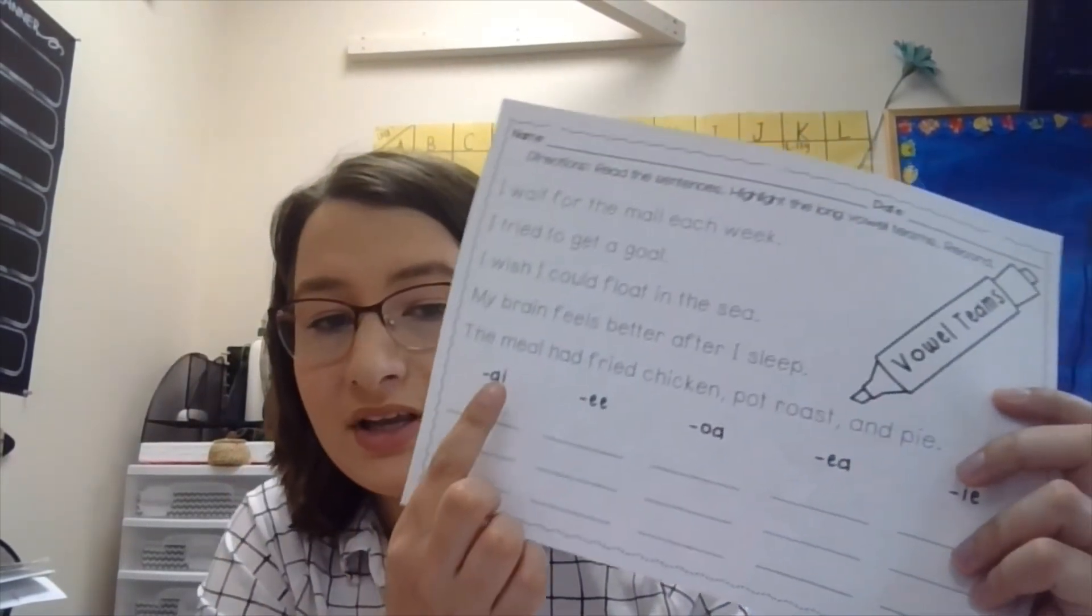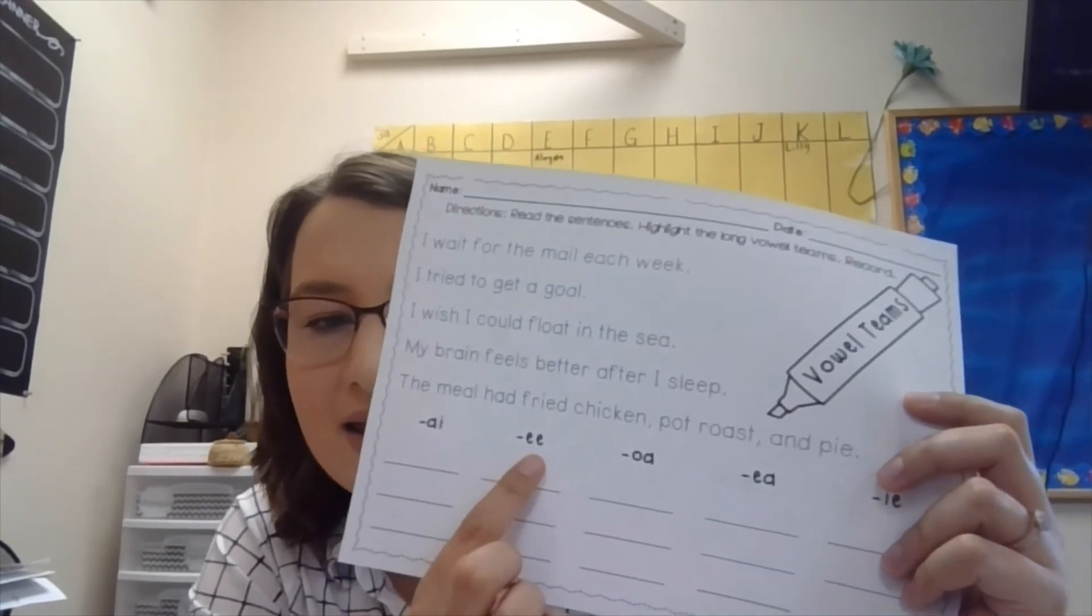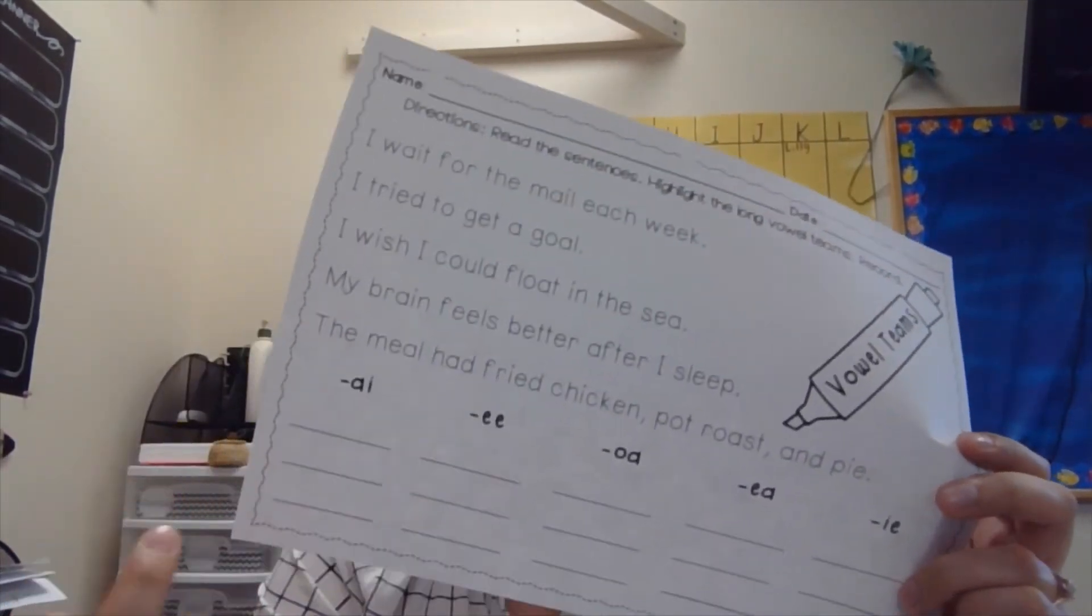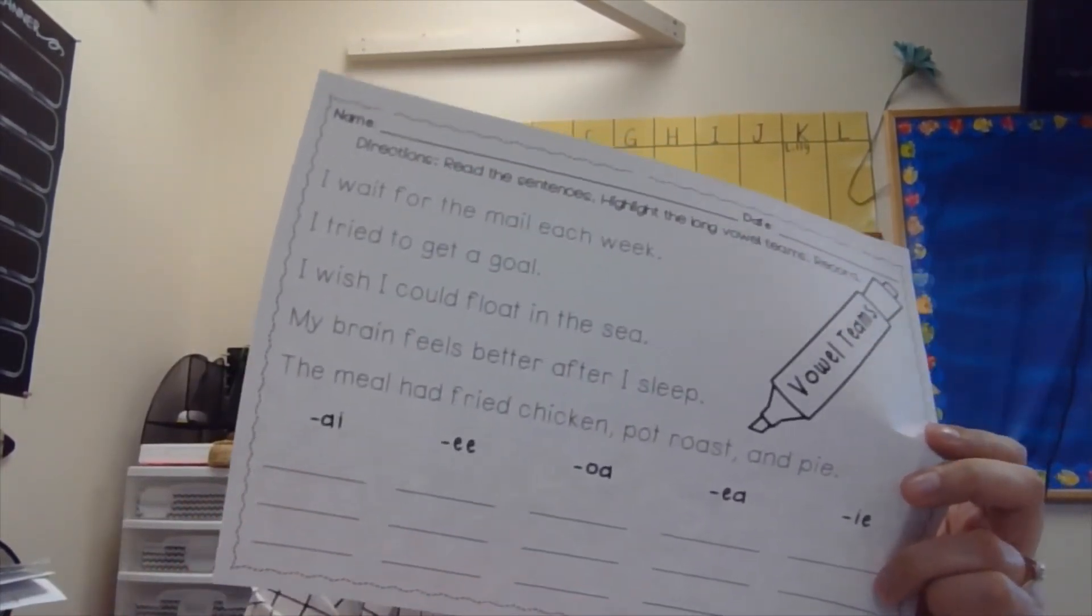And then we're going to move on to phonics. So for phonics, we're doing the same type of highlight thing. So get your highlighter ready. We're going to read the sentence and highlight the long vowel teams. So this time we're looking for A, I, E, E, O, A, E, A, and I, E. Once again, you're going to highlight all of those. Then you're going to write three examples under each of these. So pause the video and do that and then come back for animal research report.